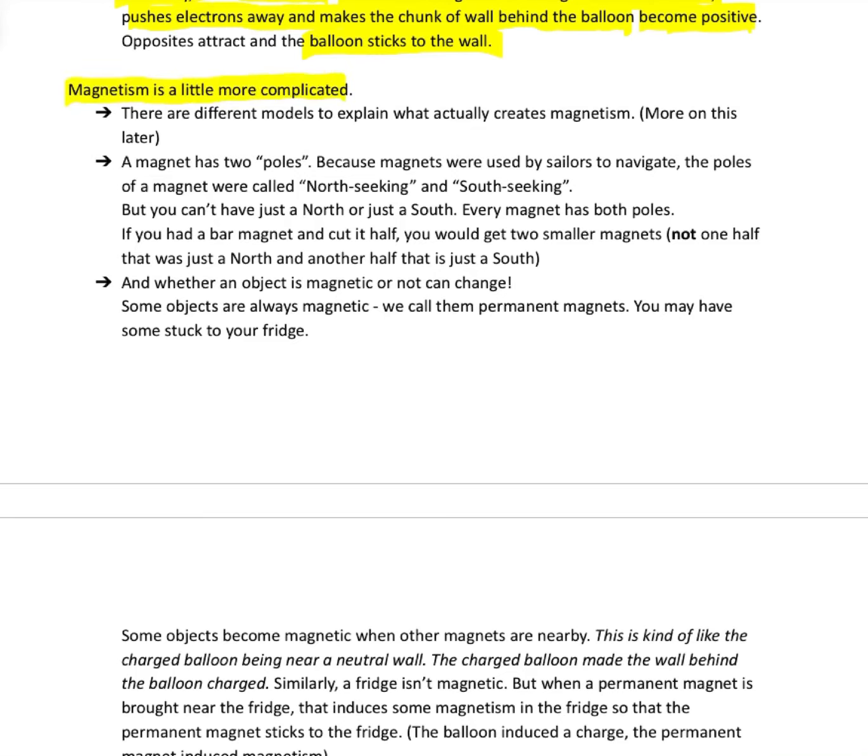Magnetism is definitely more complicated. There's two different models to explain what creates magnetism. We're going to talk about that next. We're going to do a simpler model. More on that later.